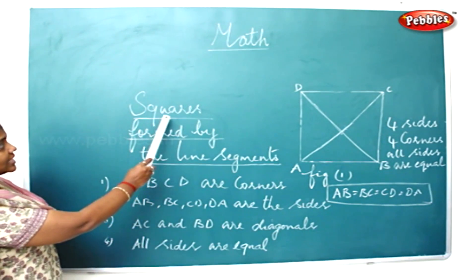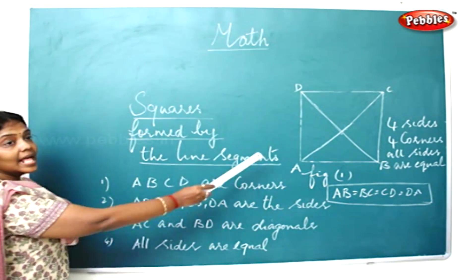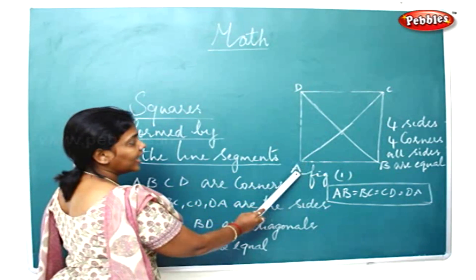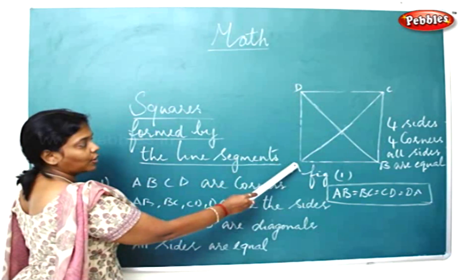Now children, we are going to see squares formed by using line segments. Here in the above figure, A, B, C, D are the corners.